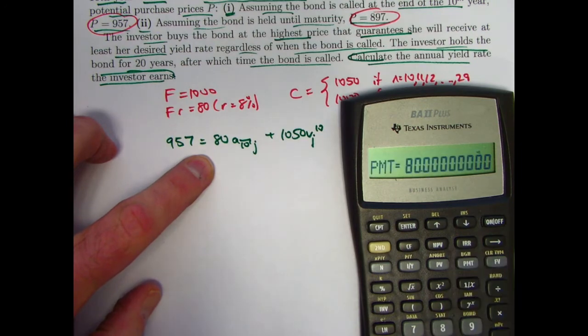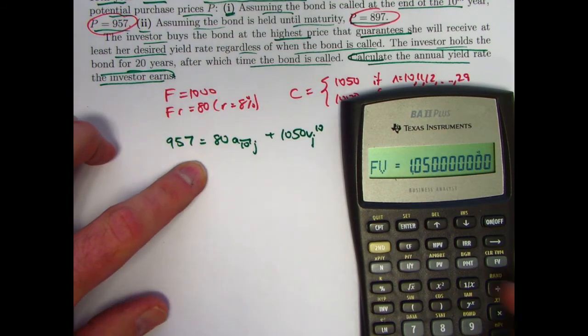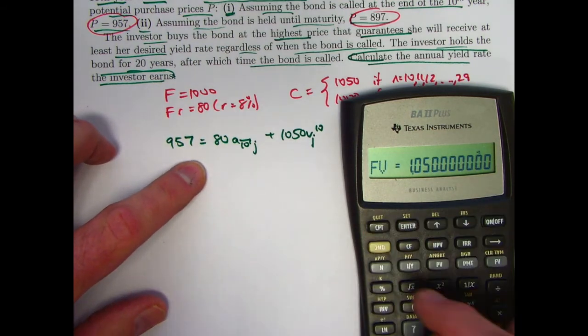80 should go into PMT as a positive quantity, and the 1050 should go into FV as a positive quantity. Let's compute CPT, interest per year,